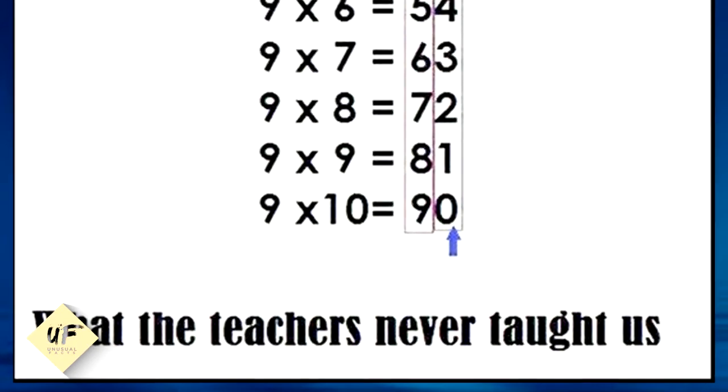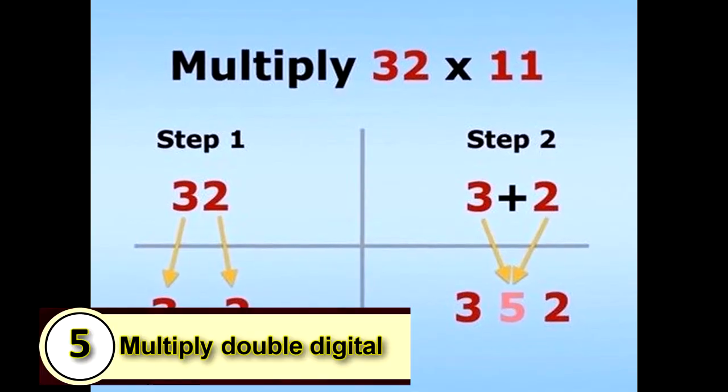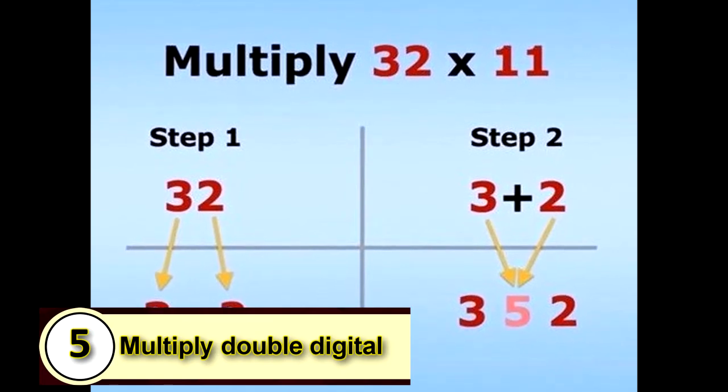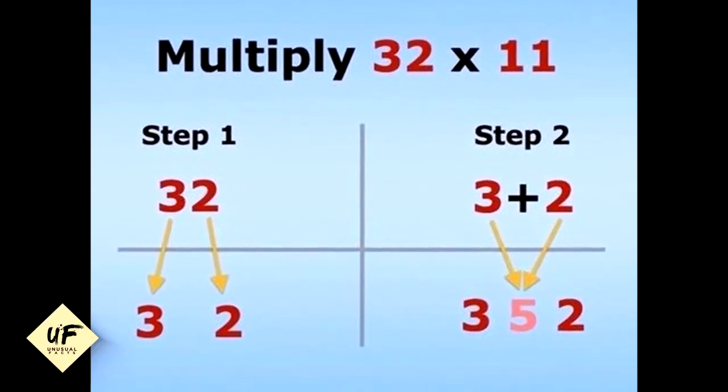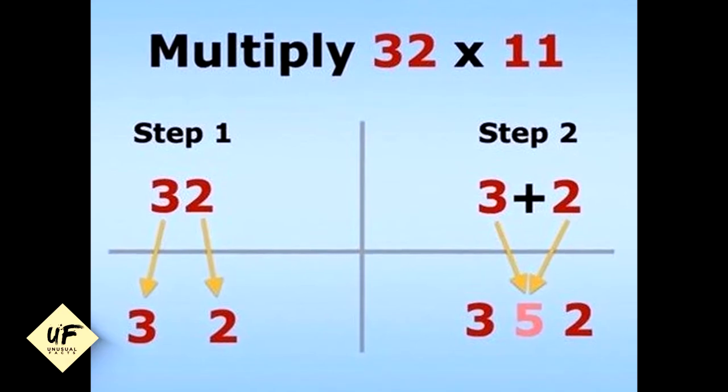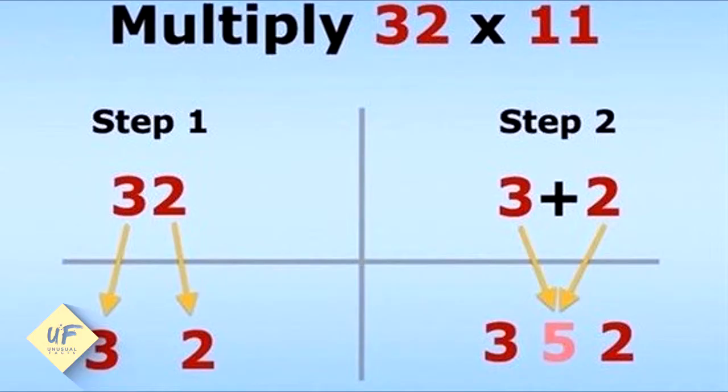This is something that teachers never taught us. Number 5: Here's how you can multiply double-digit numbers by 11. Let's multiply 32 times 11. Step 1: The 32 now becomes a 3 and a 2. Step 2: The 3 is added to 2, which equals 5. That's 352. What do you think about that one?